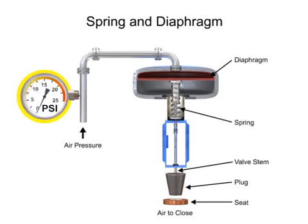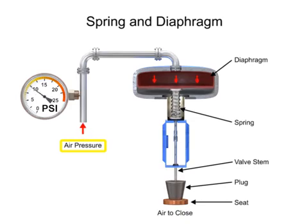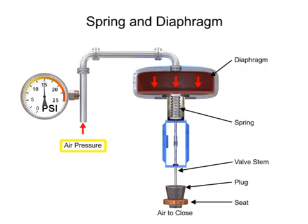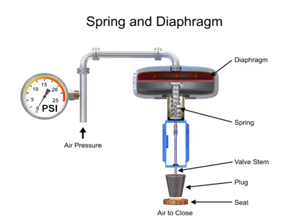A 15 PSI pneumatic signal enters the housing at the top of the actuator. As pressure is exerted on the diaphragm, a downward force is applied against the spring which moves the restrictor. The diaphragm moves until it creates an equal but opposing force against the spring, at which time the motion stops as the plug meets the valve seat. With no air pressure, the restrictor is pushed upward by the spring to act as a normally open control valve.